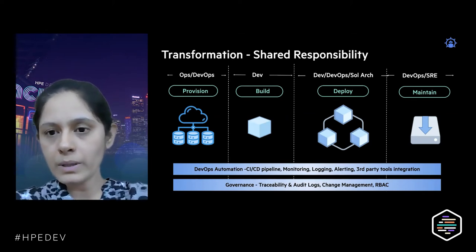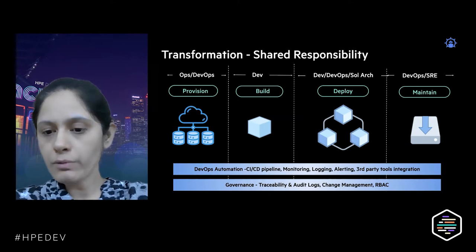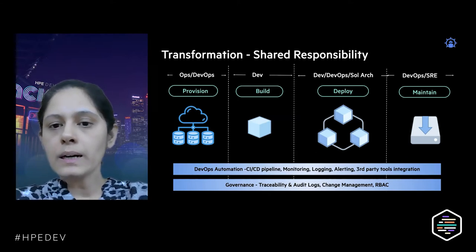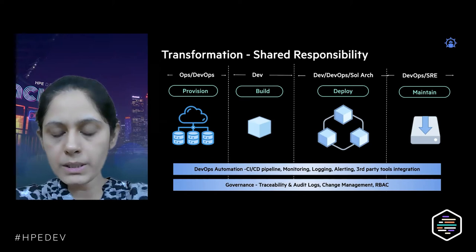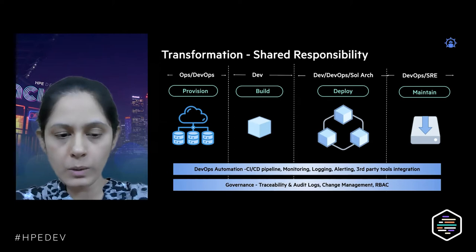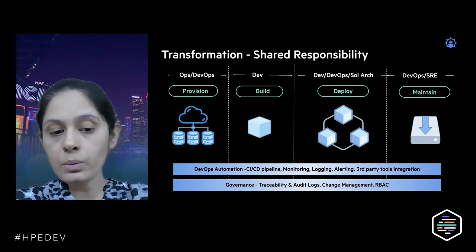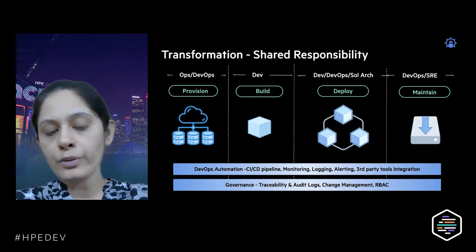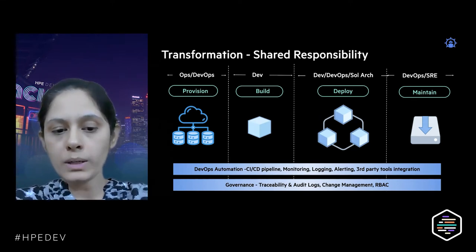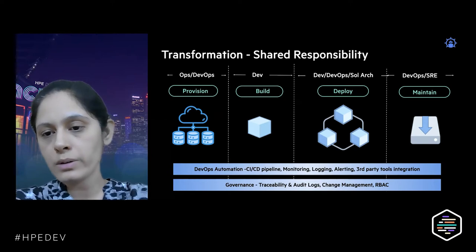Finally, when deploying and maintaining these applications, DevOps or SRE teams are involved. There is automation involved throughout the whole process, and we also have to look at the governance aspect — maintaining traceability and logs of who made what change at what point in time, and how to give access controls across these different stakeholders.